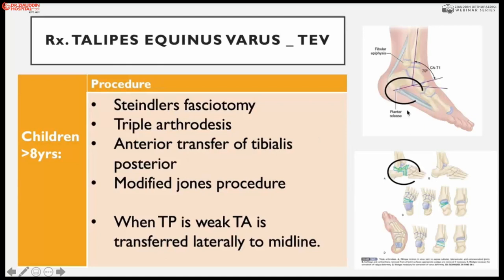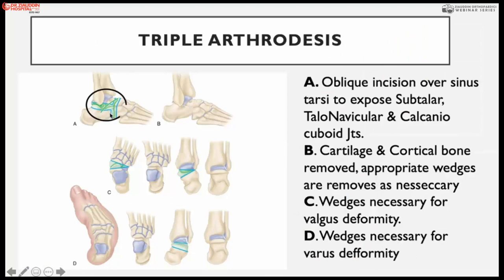When toe flexion contractures are present, the modified Jones procedure is used. When tibialis posterior is weak, tibialis anterior is transferred laterally to the midline. For triple arthrodesis, the cartilage is denuded from the subtalar and midtarsal joints through a lateral incision over the sinus tarsi; all three joints are released and denuded of cartilage and soft tissue and realigned. For significant varus, a lateral wedge or open wedge osteotomy at the midtarsal joint is performed to achieve normal foot alignment.